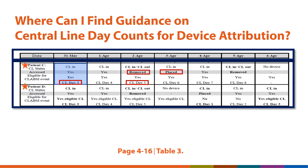Let's look at Patient D. This patient also had three central line days for device attribution counted by March 31. The central line was removed on April 2 and replaced on April 4. Because a full calendar day passed on April 3 with no central line in place, the central line day count for device attribution starts over on April 4, which becomes central line day count 1 for device attribution. The patient will not be eligible for a CLABSI event again until April 6, the new central line day count 3 for device attribution.